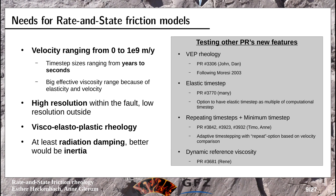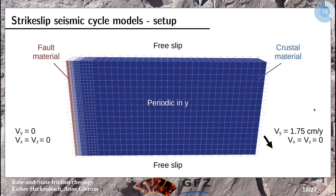Now I'm ready to show what my models actually look like. I'm currently modelling simple strike-slip models using a 3D box that is periodic in the y-direction. I have a fault material on one side, that side is fixed and cannot move, and the other side moves with a constant rate. The top and bottom are free-slip, and I have a finer mesh in the fault material.